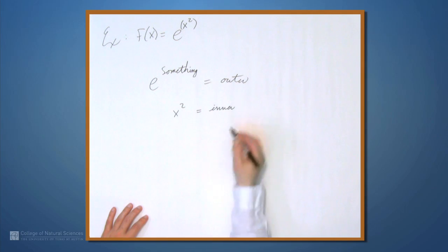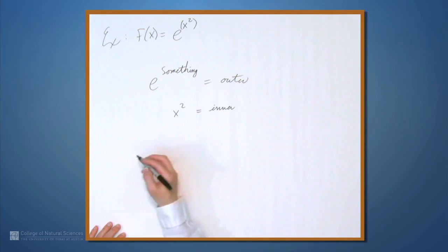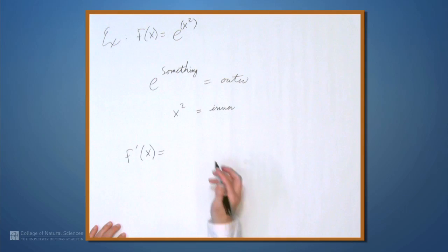And I'm writing outer and inner here. Once you start doing more of these, you might not need to write these. But it's actually a good thing to do when you're first using the chain rule. So what's f'? f' of x. Derivative of e to the something is just e to the something. Derivative of e to the x is e to the x. So we start with e to the x-squared. And then by the chain rule, we multiply by the derivative of the inner thing. And the derivative of x-squared is 2x. So we're done. This is often written 2x e to the x-squared. But that's not much of a simplification. Here's the derivative.